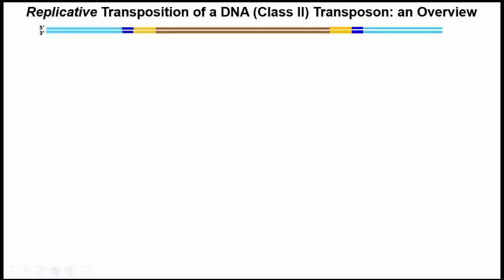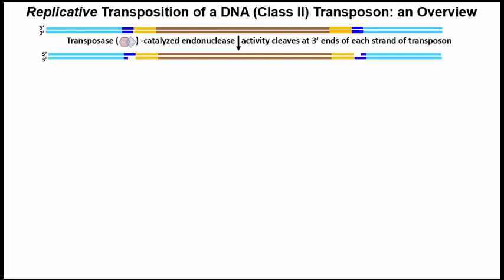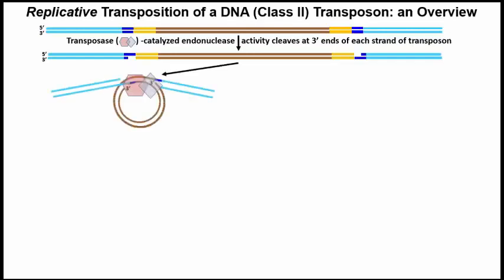Now let's look at a general description of the replication-based mechanism of DNA transposon mobility. We start with our transposon ready to jump. Mobility begins with transposase-catalyzed cleavage and hydrolytic trimming of host DNA at the transposon locus. But this time, the transposon is not excised from its resident site. Instead, the transposase holds the transposon in a circular configuration, but with the genomic DNA still attached.